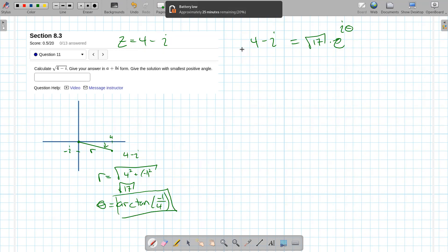Now, I want to take the square root, which is the same as taking the square root of that right there. Okay, now square root works great with products. That means I have the square root of the square root of 17 times the square root of e to the i theta.